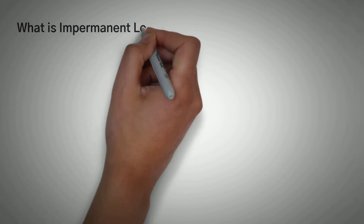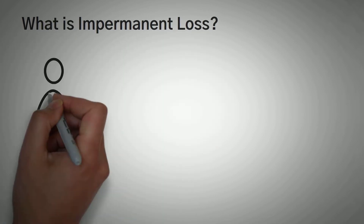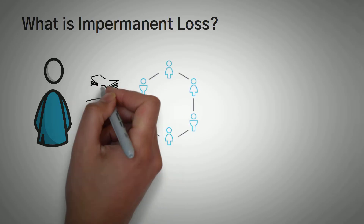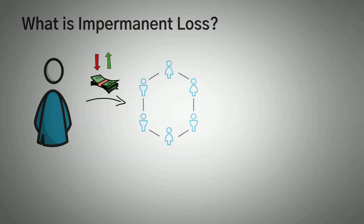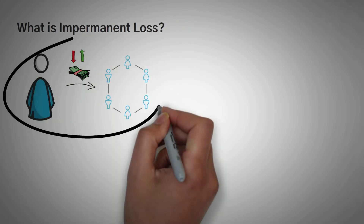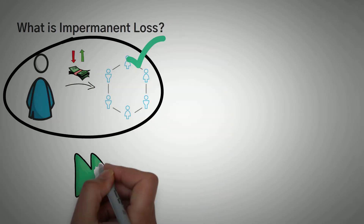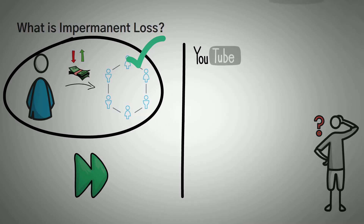What is Impermanent Loss? Impermanent loss is the unrealized loss that occurs when your share of a liquidity provider position becomes uneven compared to its original position. If you knew what that meant, great, you don't have to watch this video. However, if you were as clueless as we were a few weeks ago, stick around and you'll be able to explain this concept of impermanent loss to your grandmother.